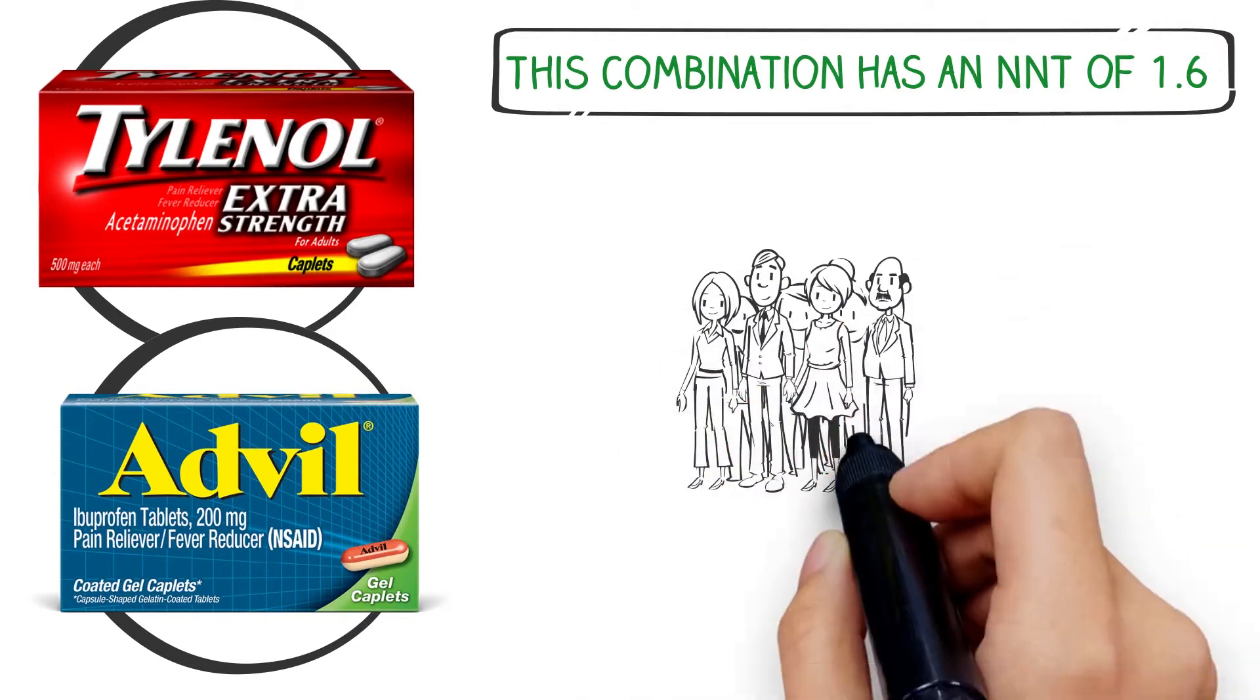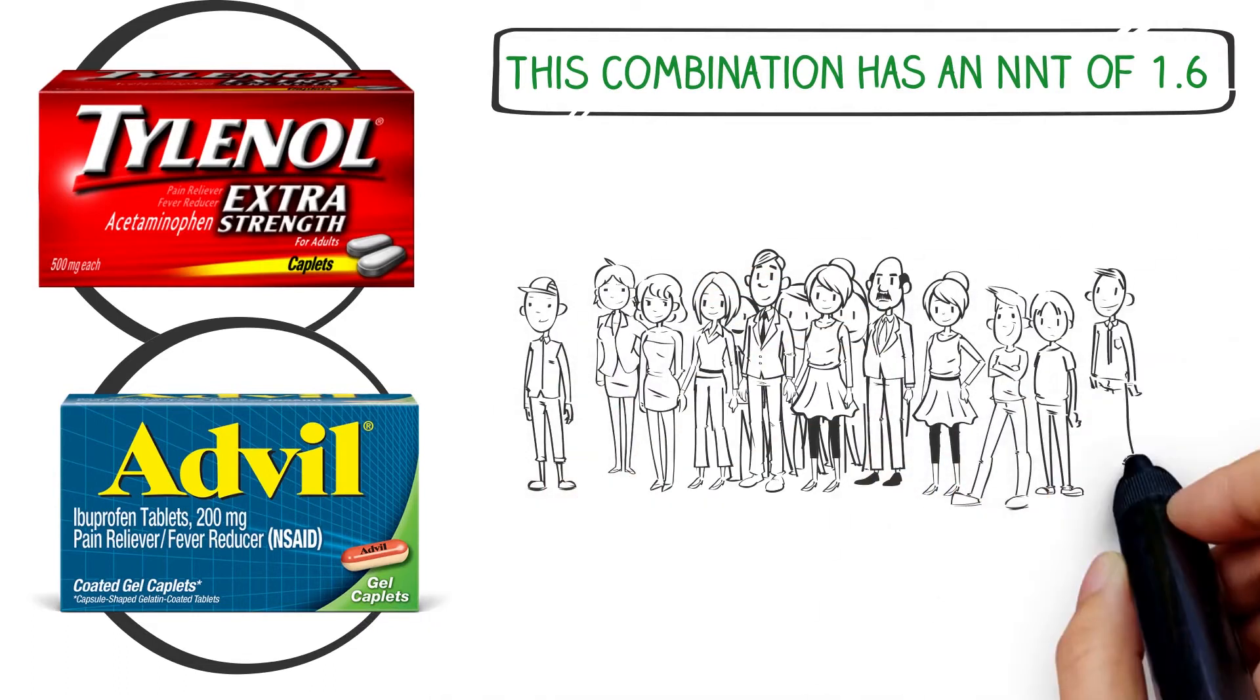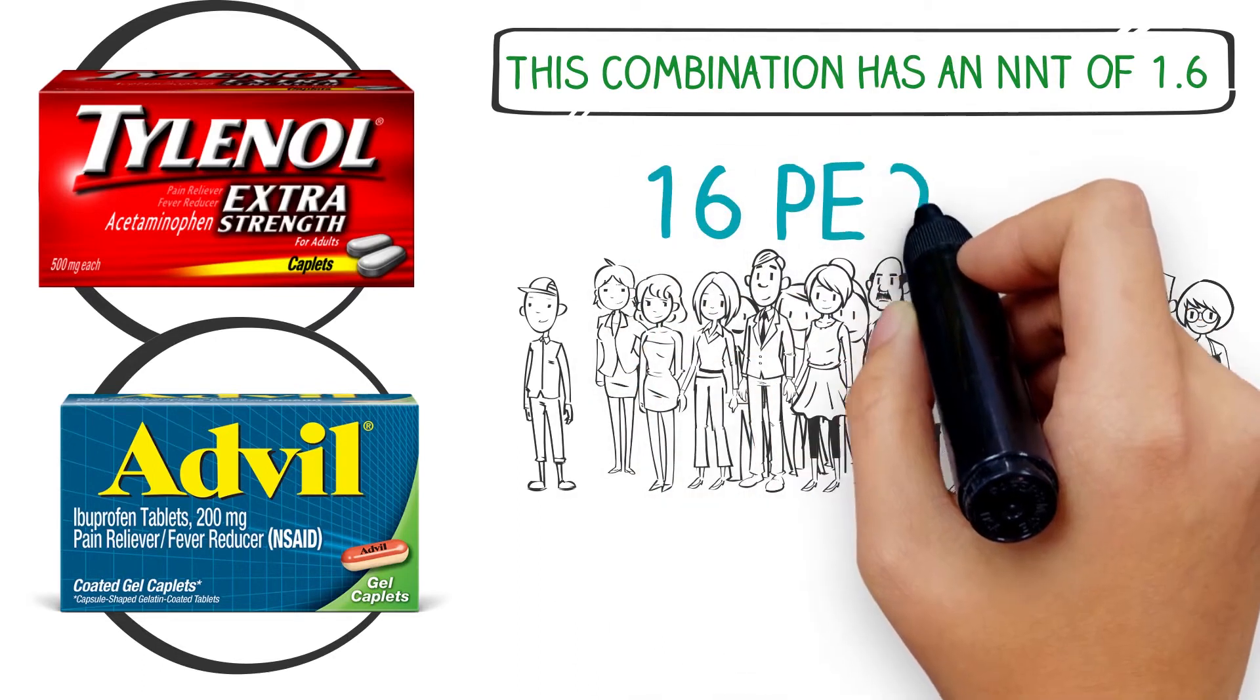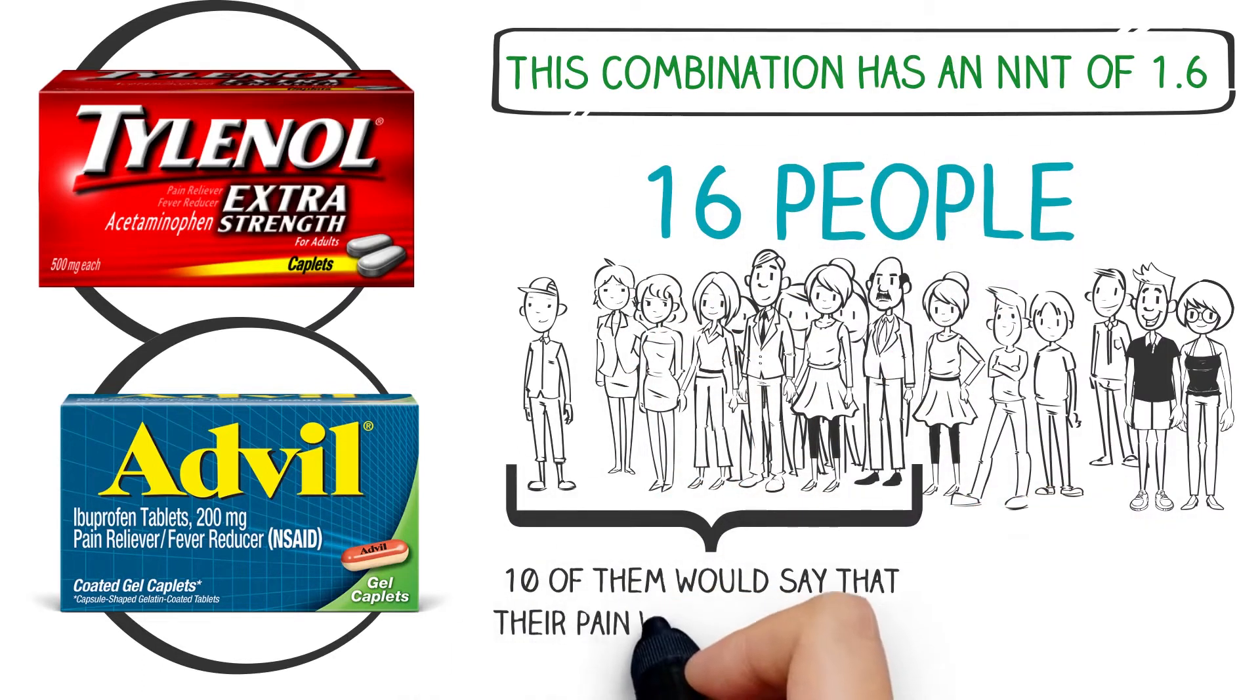That means if you gave the 500 mg of Tylenol plus 200 mg of Ibuprofen to 16 people in acute pain, 10 of them would say that their pain went down by 50%. That's considered a pretty effective drug.